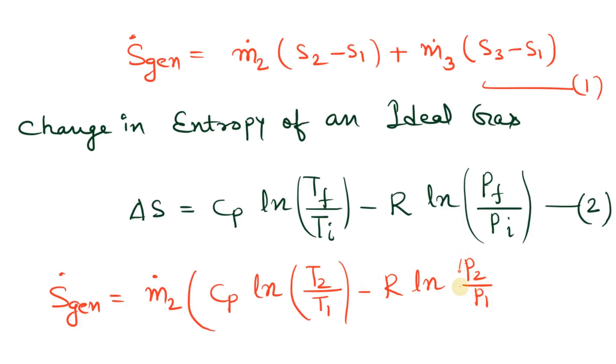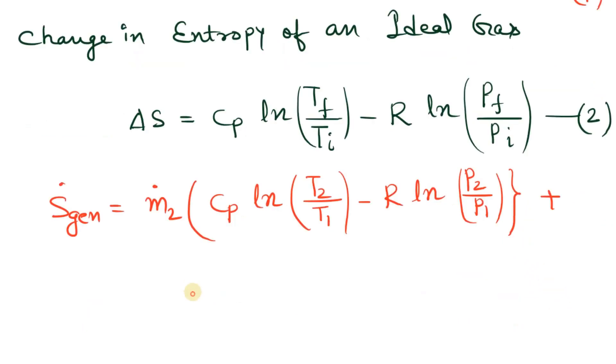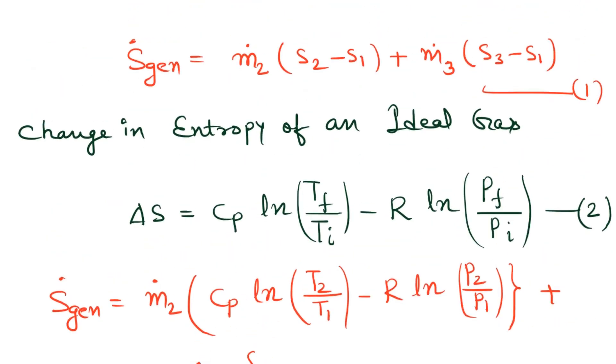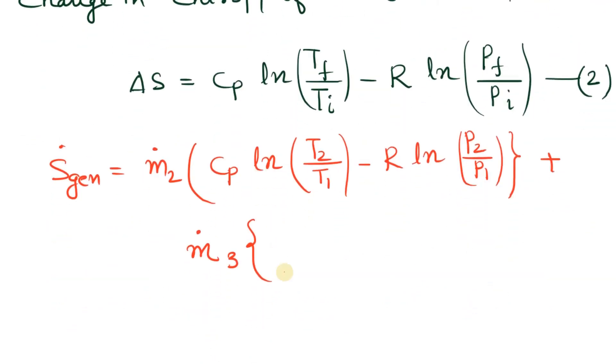Plus m3_dot, this will equal Cp ln(T3/T1), because from process 1 to 3 we are writing T3 by T1, minus R ln(P3/P1).